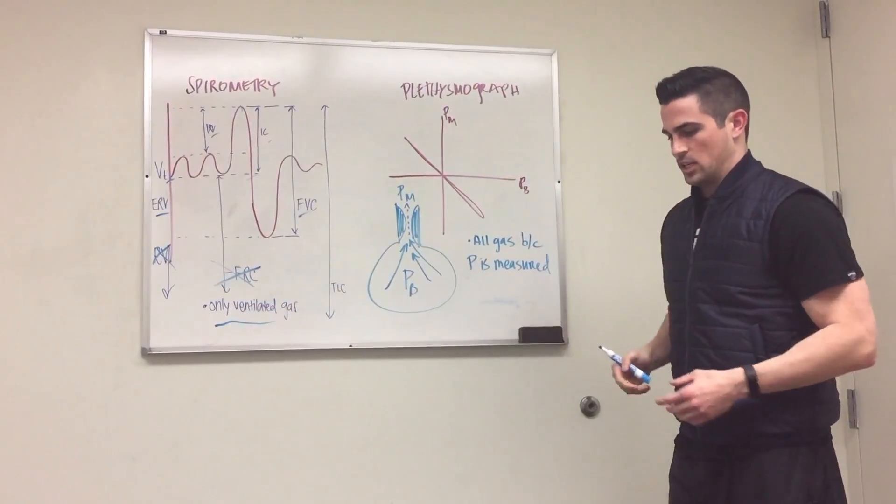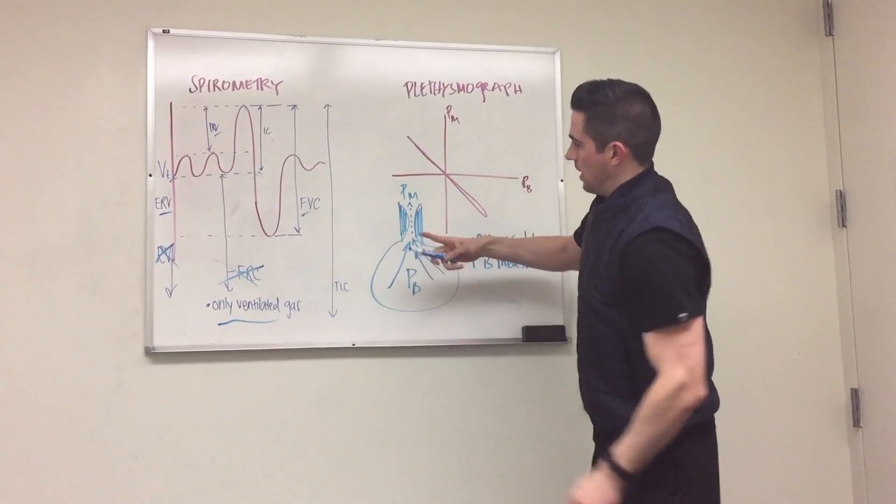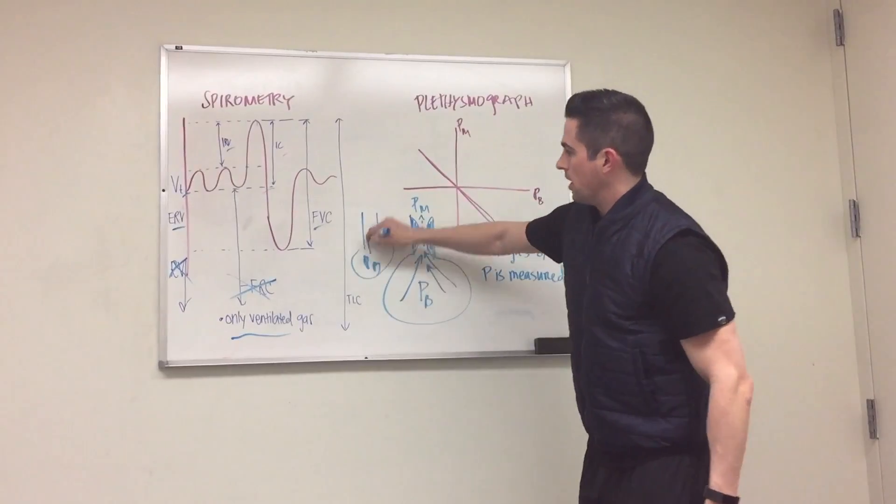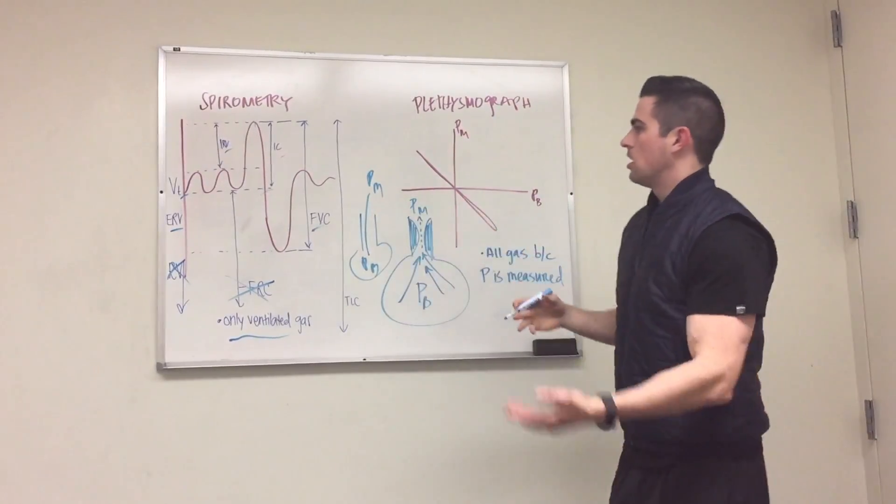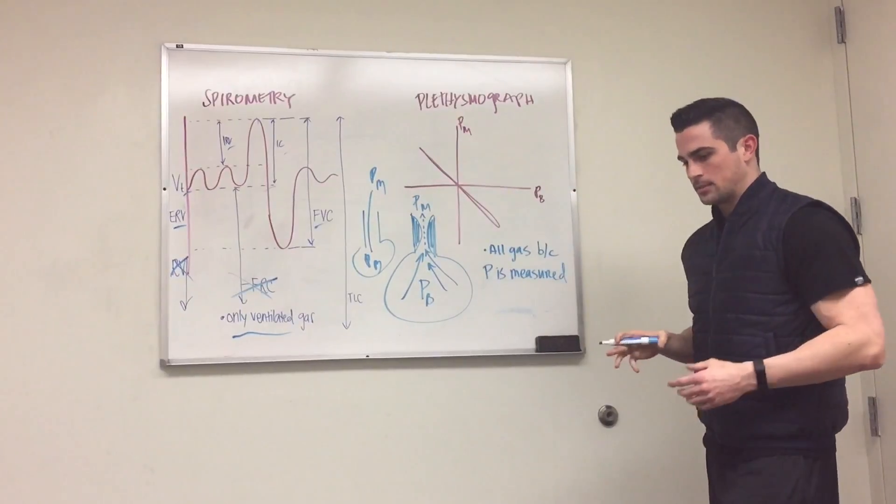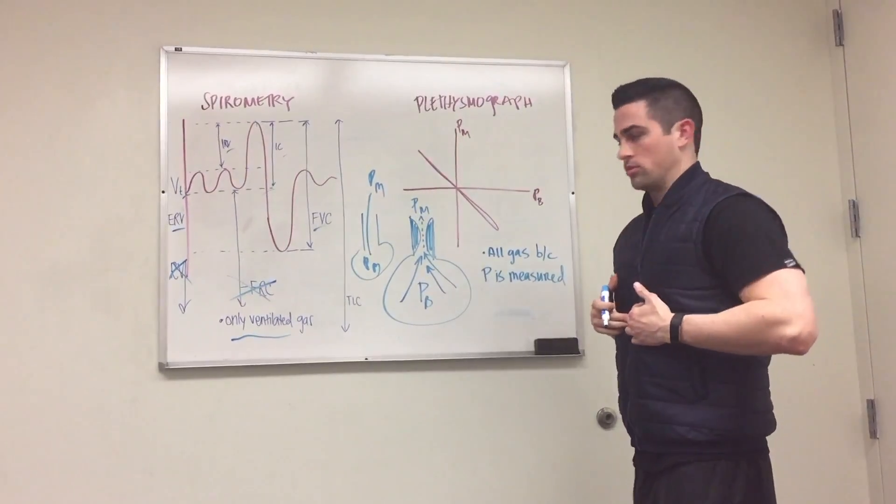When you're inspiring and expiring, ideally this is without any resistance. So it actually looks like this. Your pressure in your body will be equal to your pressure in your mouth, or some ratio like this. That's why this line goes back and forth like this. You're matching your alveolar pressure.